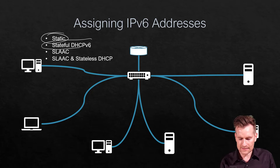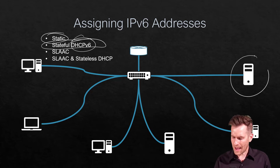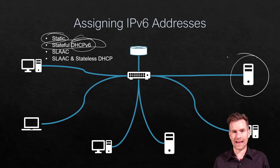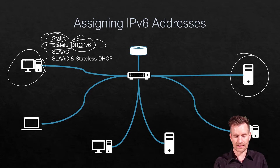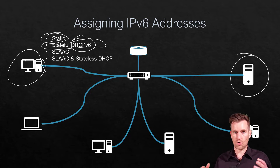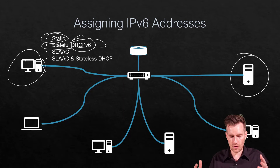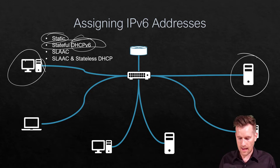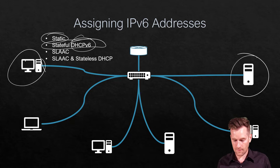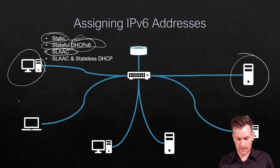We also have stateful DHCP version 6. So that means you have a server that can hand out IP addresses to your machines, and there's a mechanism that allows DHCPv6 to work. We'll possibly talk about that in a future video, but we're not going to cover it in this video. Then we have SLAAC, which is the automatic assignment of addresses.